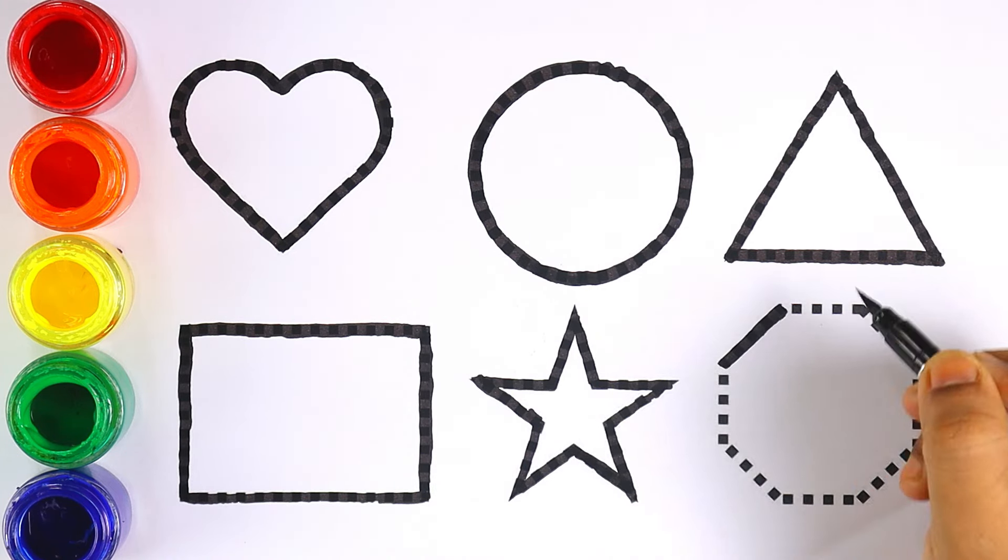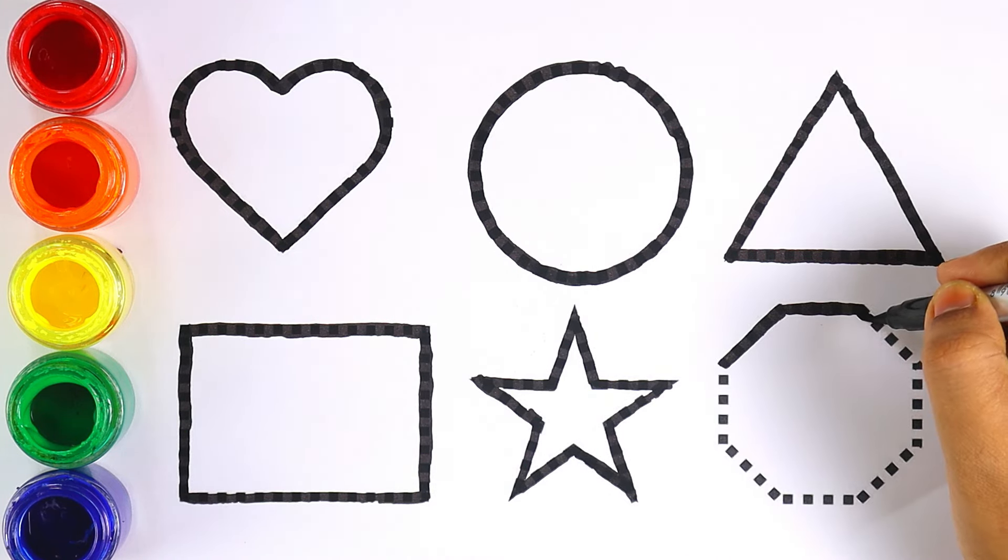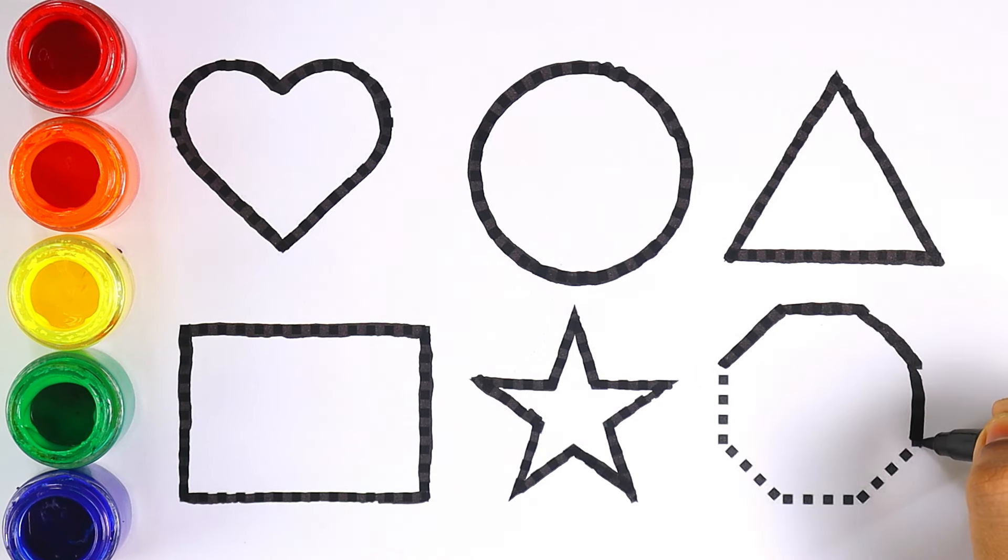Let's draw the last shape which is octagon. Octagon has got eight sides.